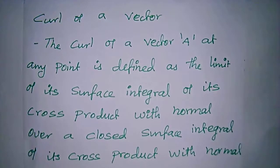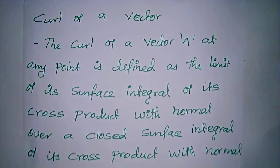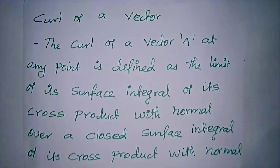Curl of a vector. Divergence and curl are related operations — divergence uses the dot product, while curl uses the cross product.